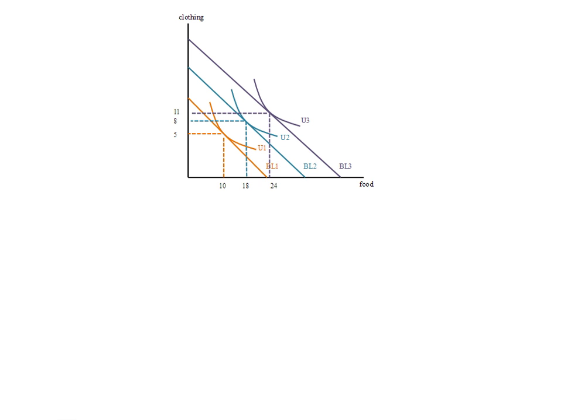Now since we're holding everything constant except income, we could show this as shifts in a demand curve. The quantity of food will be on the horizontal axis and the price of food on the vertical.